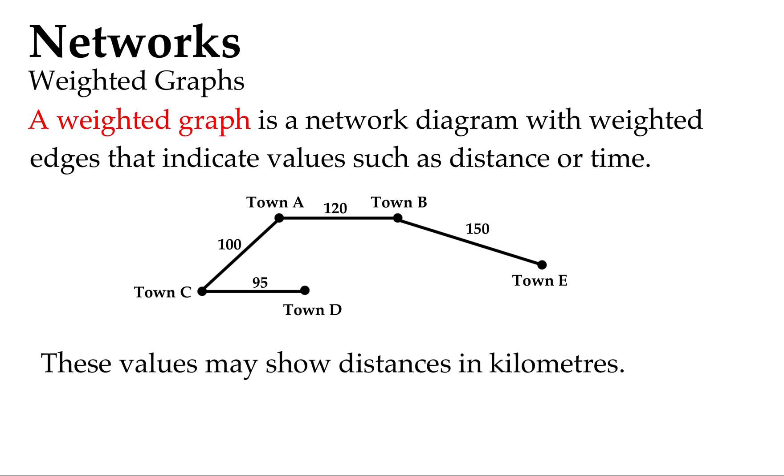These values, we're only guessing, but they probably show distances in kilometers. But they can show different values as well, such as heights between people, or how far between their houses, or their desks in a classroom. Lots of different ways we can express things in a weighted diagram or weighted graph.